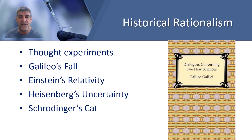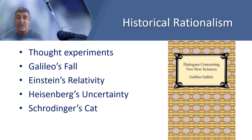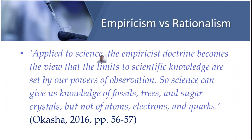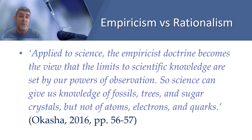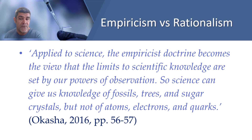Empiricism was crucial for the separation of natural philosophy from other branches of philosophy — it came to define modern science, and most scientific knowledge is empirical. Empiricism demands that all scientific information be based on evidence and tested through observation or experimentation. However, there are limits to empiricism, often identified by rationalists. Applied to science, the empiricist doctrine becomes the view that the limits to scientific knowledge are set by our powers of observation — so science can give us knowledge of fossils, trees, or sugar crystals, but not of atoms, electrons, and quarks. Thanks for watching.